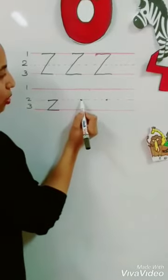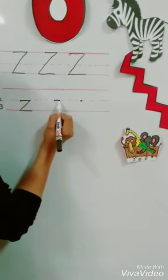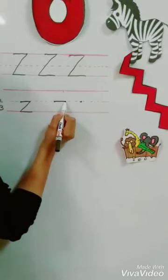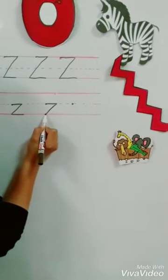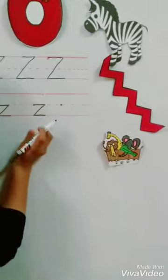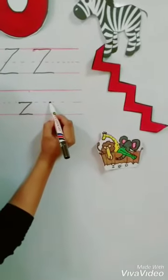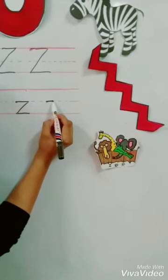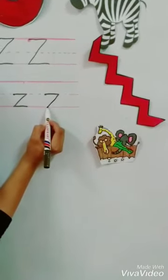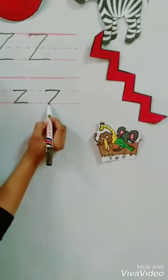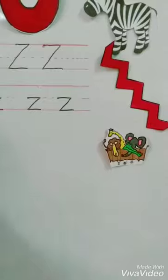Excellent. One more time. From the dot, dash on line number two, sloping line down and dash on line number three. Excellent. Bye-bye.